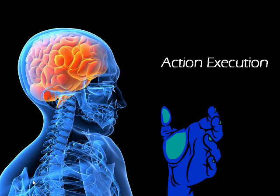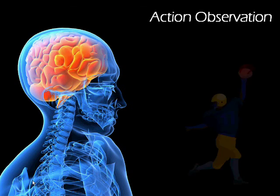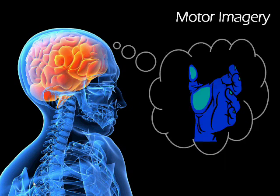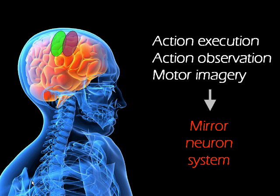When you execute an action, such as grasping a ball, a cortical network is activated that involves both motor and premotor cortex. A similar network is also activated if you observe someone performing the same action, or if you imagine performing the action yourself. This process is known as motor imagery. The overlapping cortical networks involved in action execution, action observation, and motor imagery are known as the mirror neuron system.